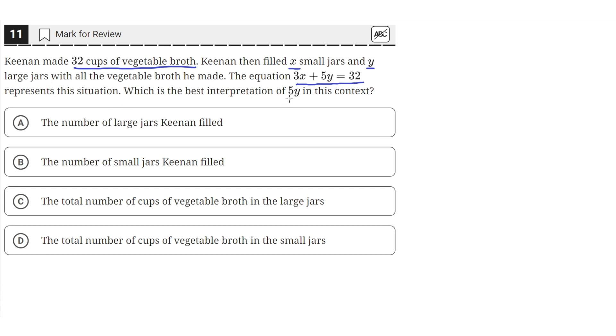What is the best interpretation of 5y in this context? So we have this equation 3x plus 5y equals 32, and this represents our situation.